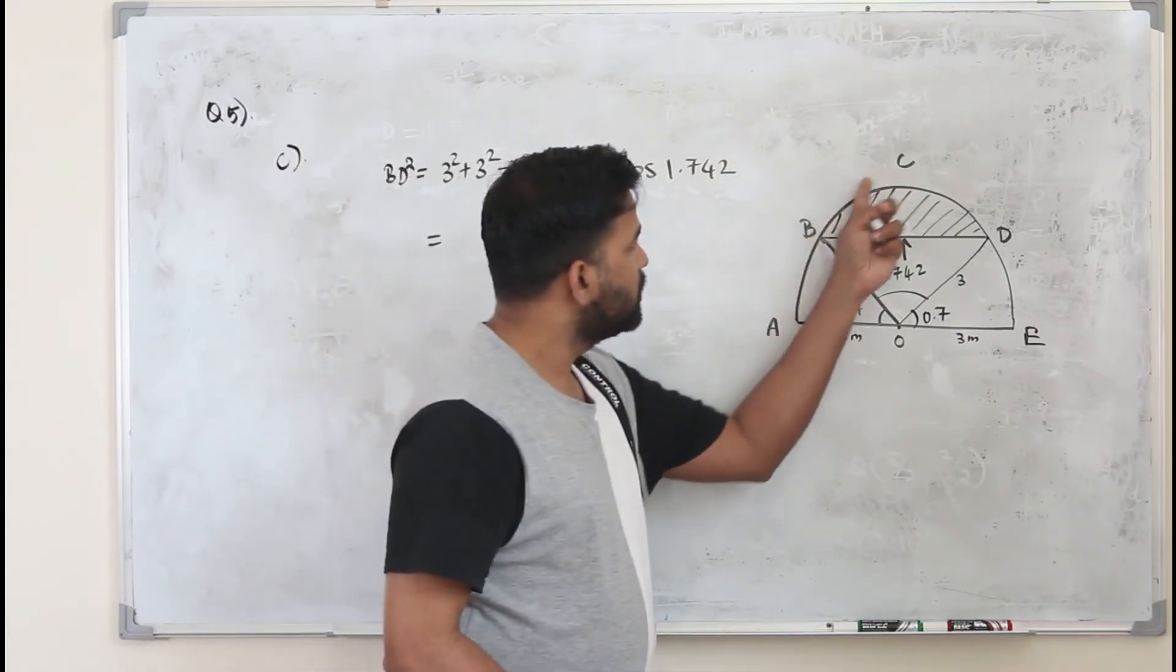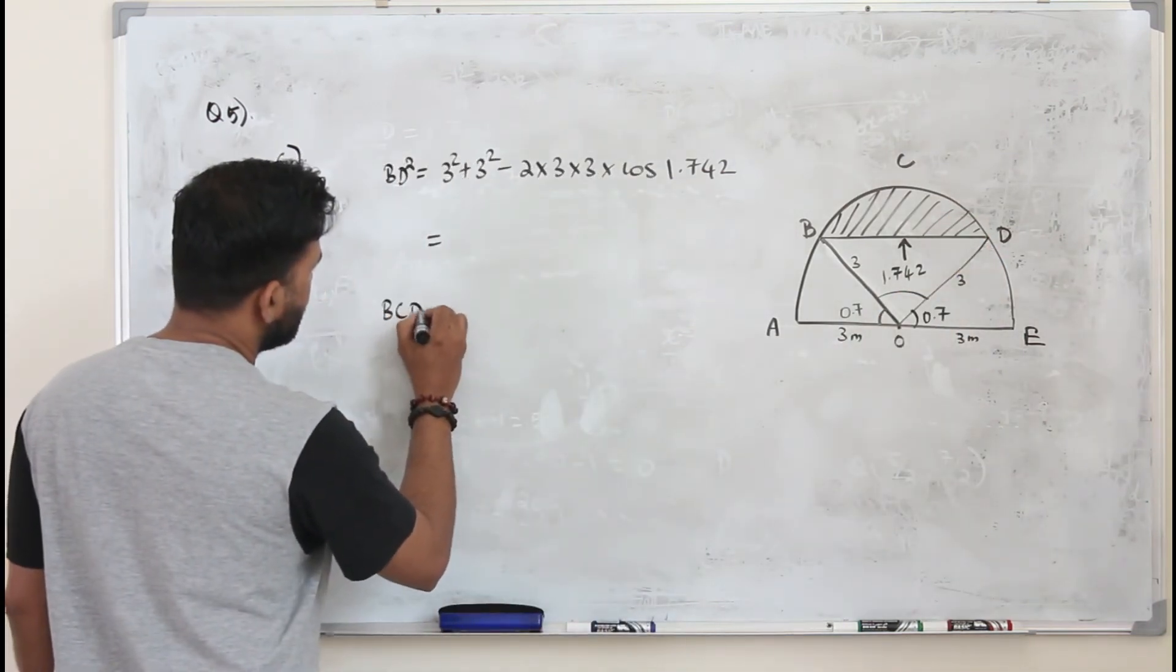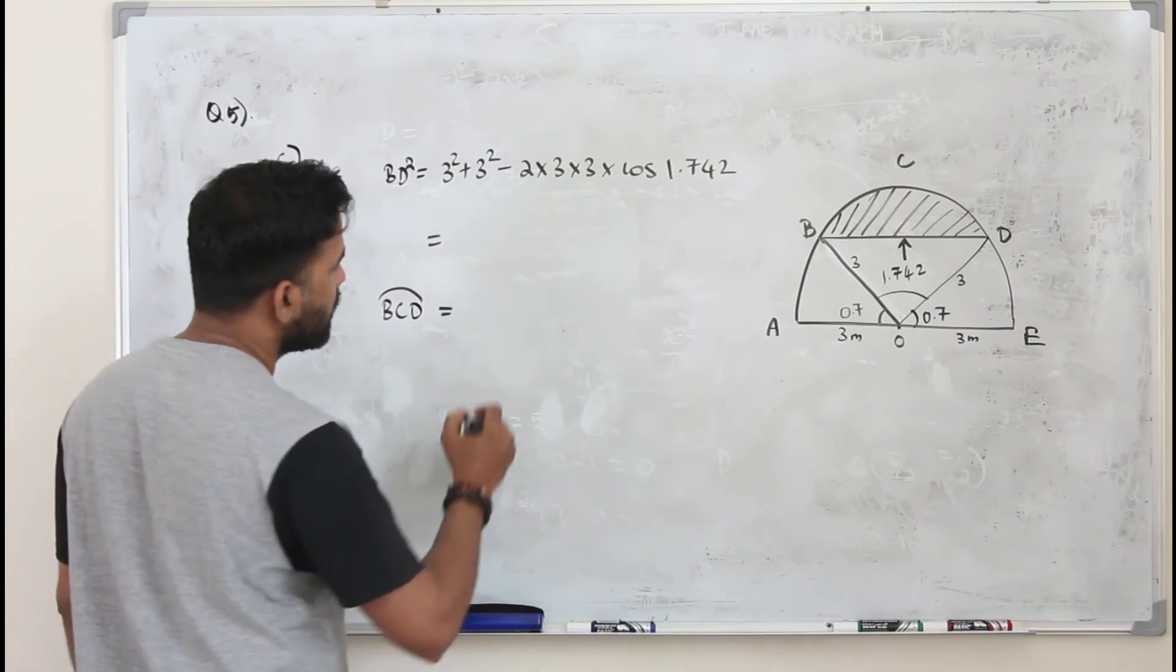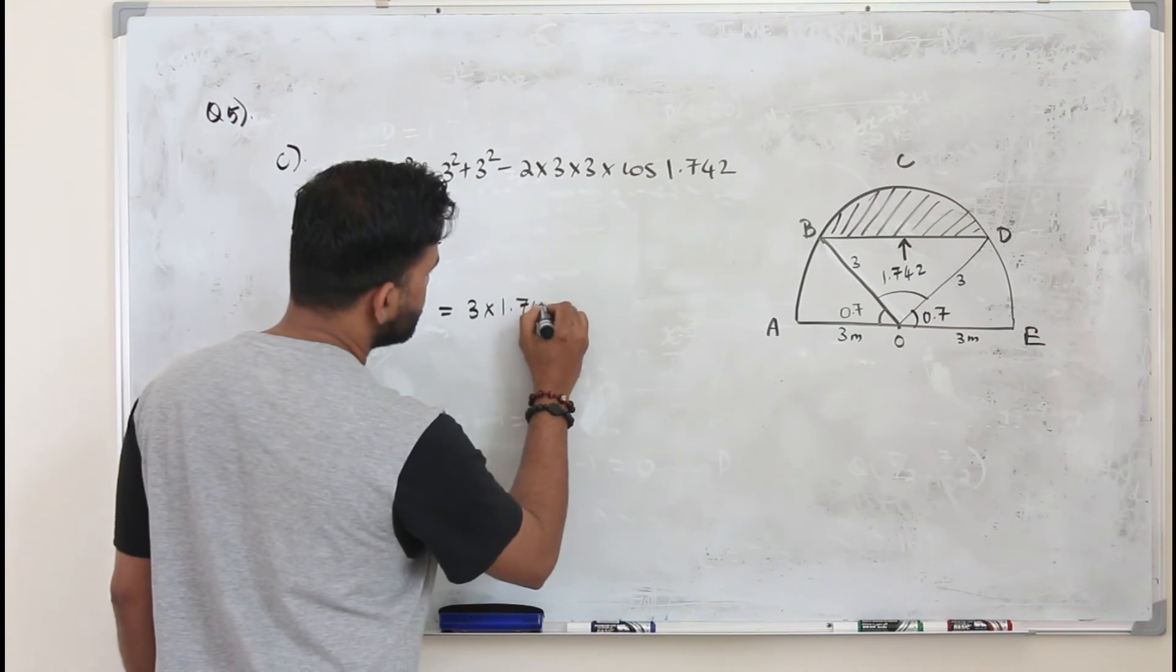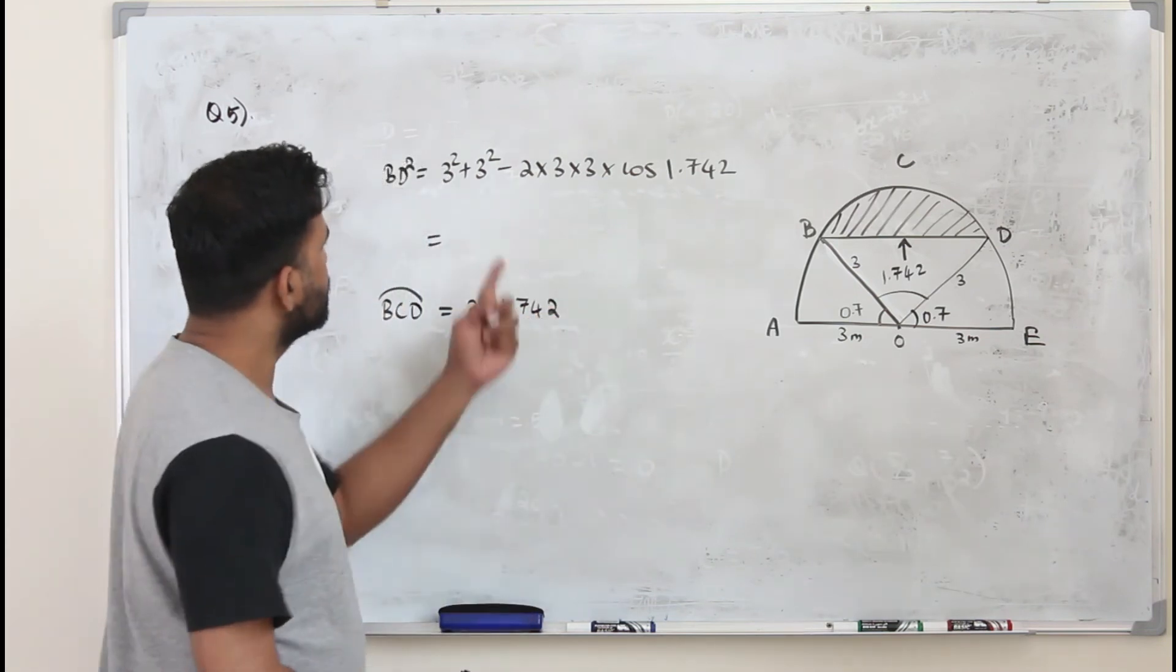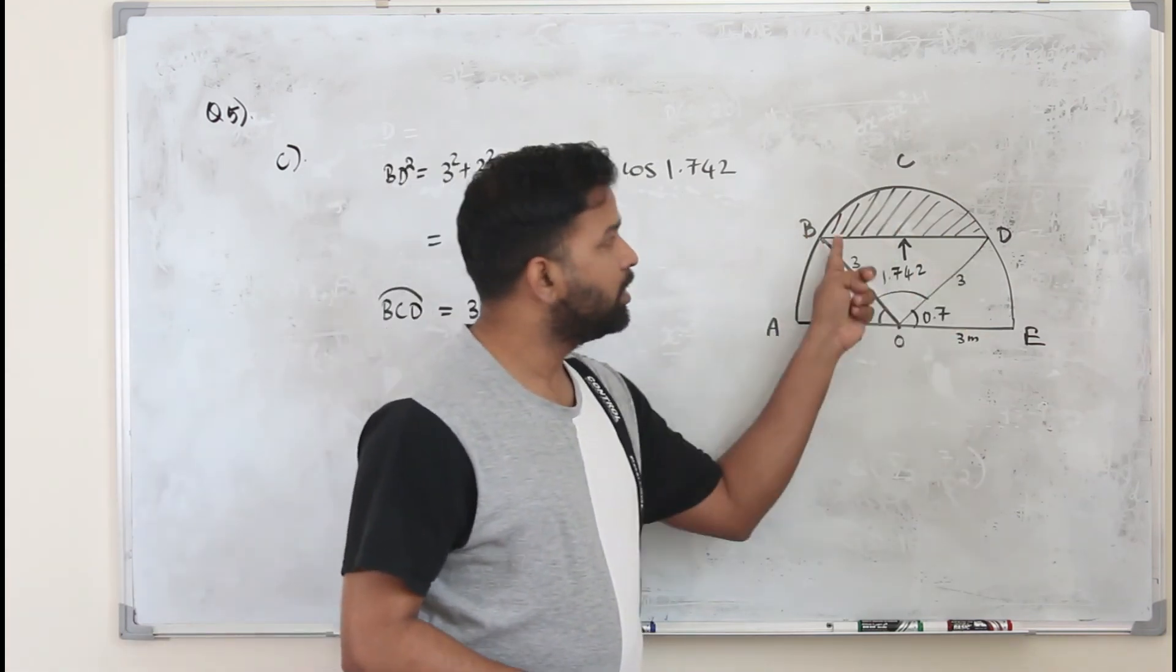And how about this arc length? Use the formula. The arc length BCD is R times theta, radius times theta, 1.74. So once you got these two values sum up together, so you get the perimeter of this shape.